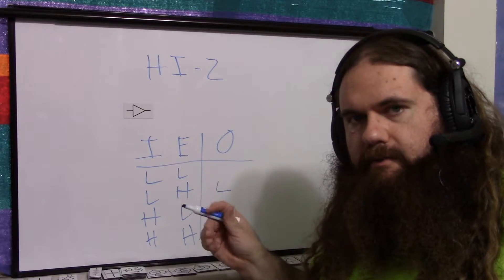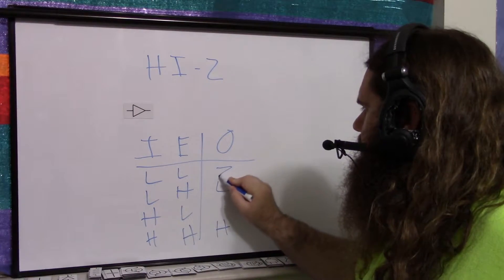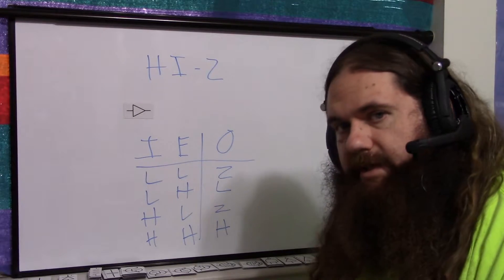If enable is low, that means the thing's turned off. High impedance. So we just say Z. In a truth table, you see it as Z.